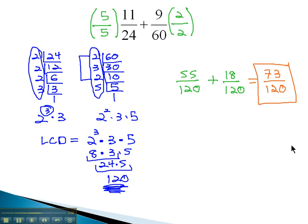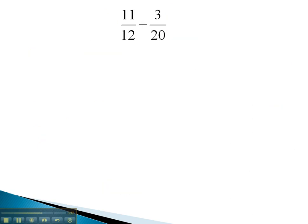This method works just fine, but there's an interesting result if we were to use the stack method on a problem instead. Let's use the stack method to find the least common denominator of 12 and 20.